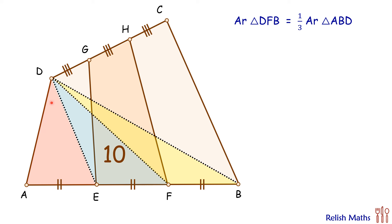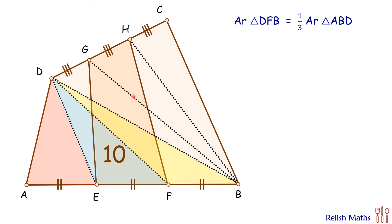Similarly, let's join point B to H and point B to G. By the same logic, we can say that the area of yellow triangle DBG will be one third the area of triangle BCD.